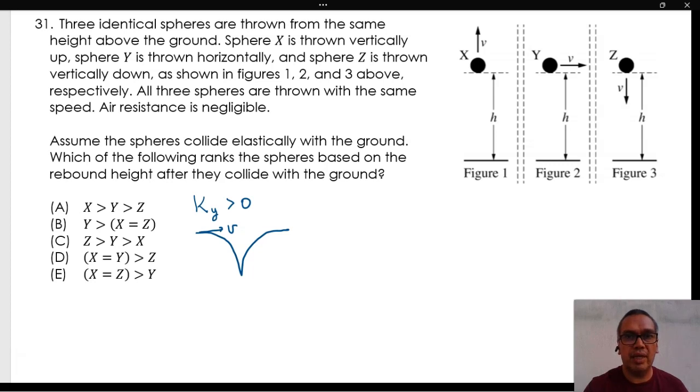On the other hand, spheres X and Z are moving vertically only. Therefore, each of them will rebound while moving only in the vertical direction, until they reach a speed of zero.